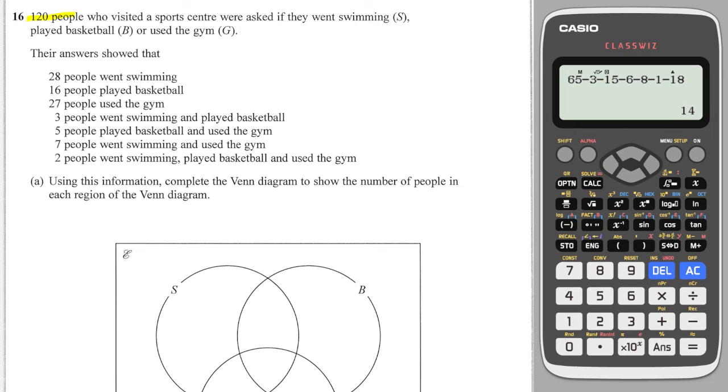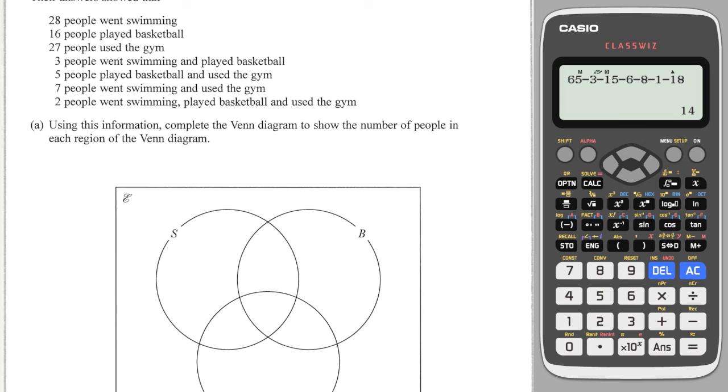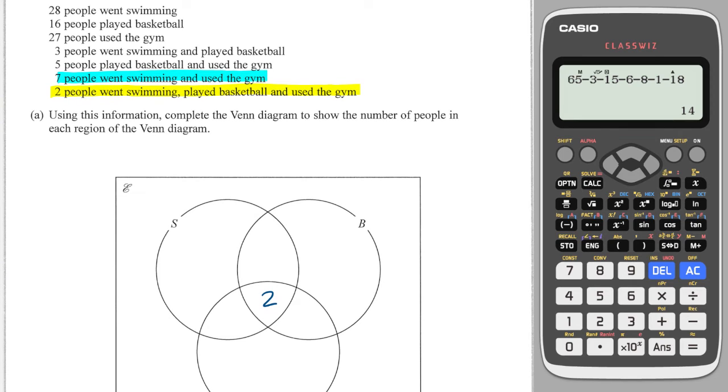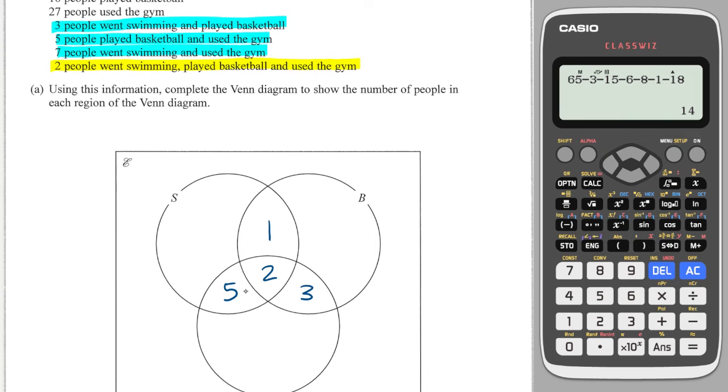Next question, we've got 120 people and they were asked if they do swimming, basketball, or use the gym, which means that they might not necessarily do any of those. We need to fill out the Venn diagram. We're going to start as always at the middle and it says 2 people did all three. Then we're going to move our way out: 7 people went swimming and used the gym, which means swimming and gym needs to be 5 to make 7 in total. 5 people played basketball and used the gym, so therefore that needs to be 3. 3 people went swimming and played basketball, which means that needs to be 1 to make 3. Then it says that 27 people used the gym, and at the moment the gym has 5, 2, and 3, which is 10, so therefore it needs 17 in here to make 27.